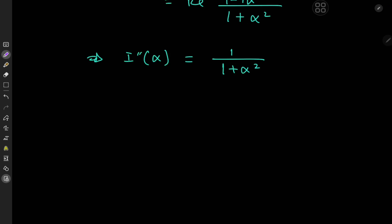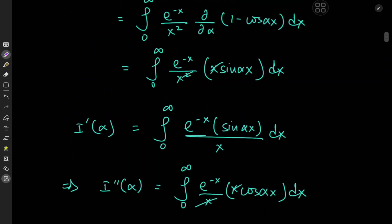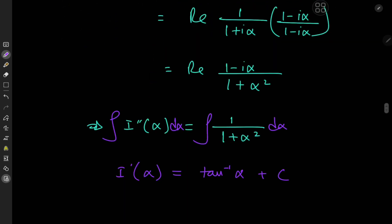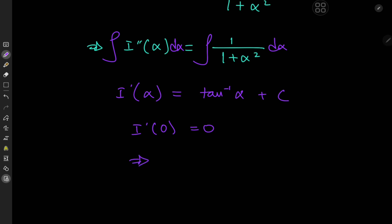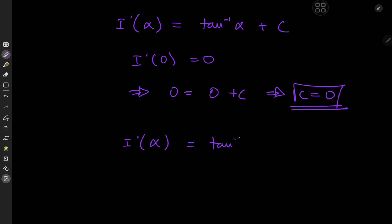So we're currently at the second derivative and we have to work our way back to the integral function. Integrating with respect to alpha, on the left-hand side we have the first derivative with respect to alpha, and on the right-hand side we have the inverse tangent of alpha plus a constant of integration c. To determine the constant, I'll look at what the first derivative looked like. If I plug in alpha equal to 0, I have sine of 0 in the numerator, which means I prime of 0 equals 0. So 0 equals arctangent of 0 plus c, and the constant of integration is conveniently equal to 0. So we have the derivative of I with respect to alpha equal to the inverse tangent of alpha.